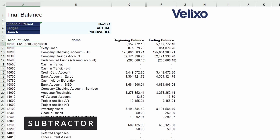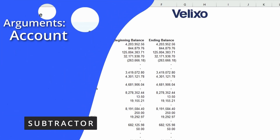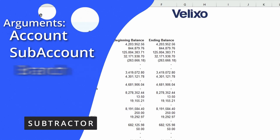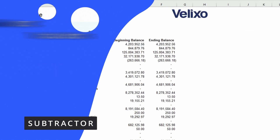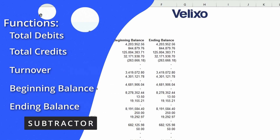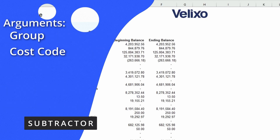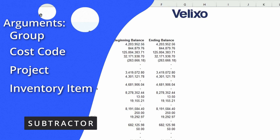Once I hit enter you can see the ending balance update. The subtractor operator can be used with the account, subaccount, or branch arguments to exclude certain values from a range in the account total debits, account total credits, account turnover, account beginning balance, and account ending balance functions, as well as the account group, cost code, project, inventory item, and branch arguments in many of the project module functions.